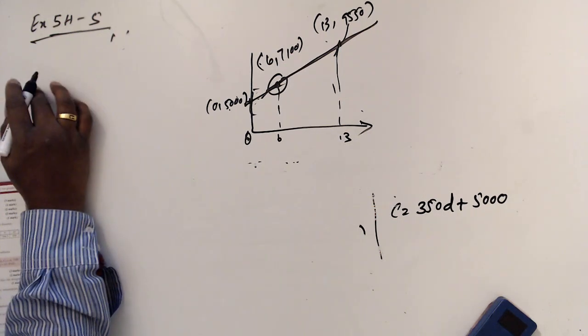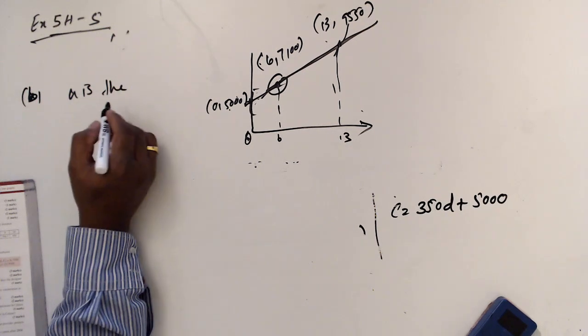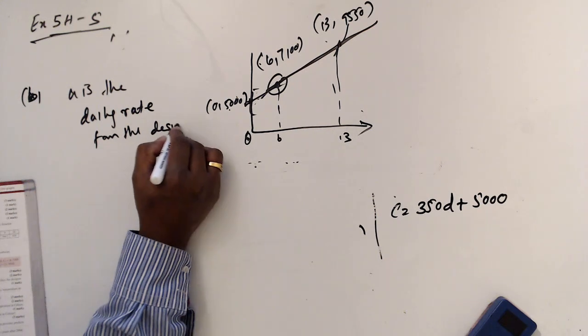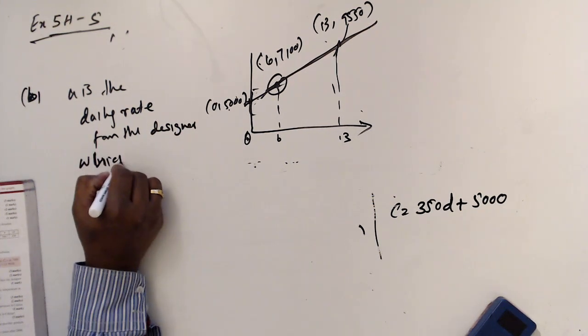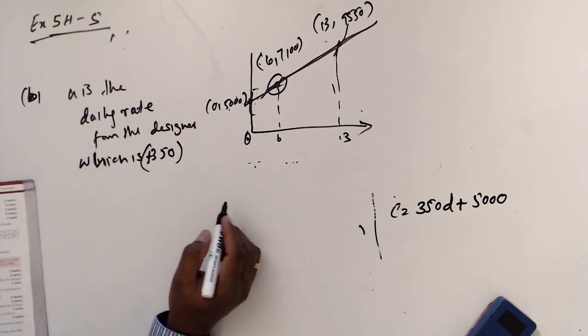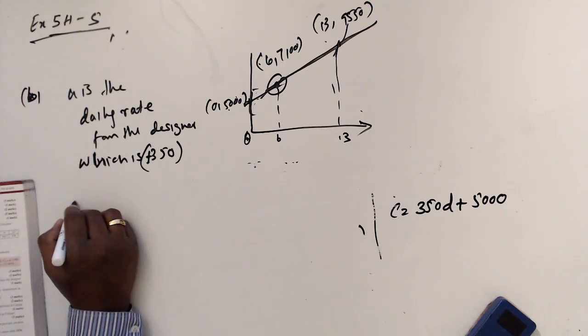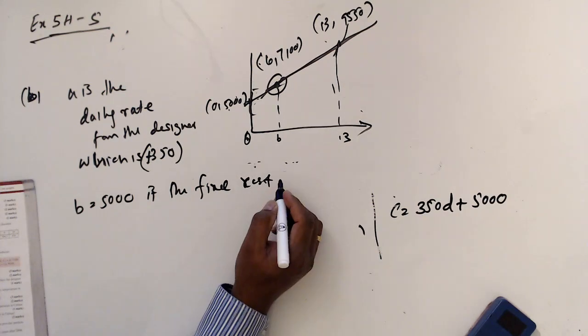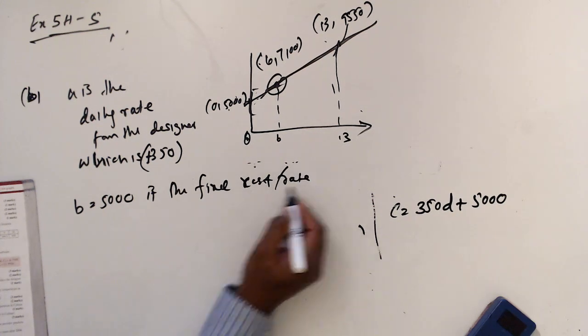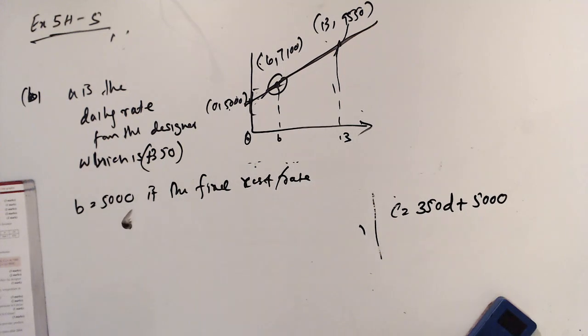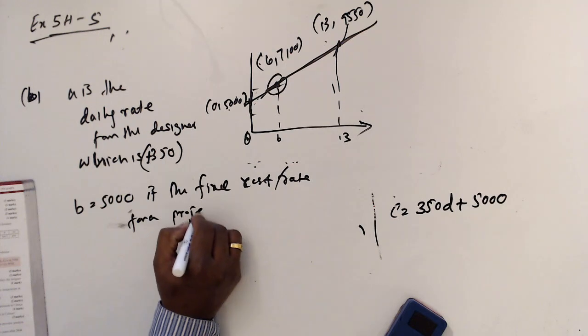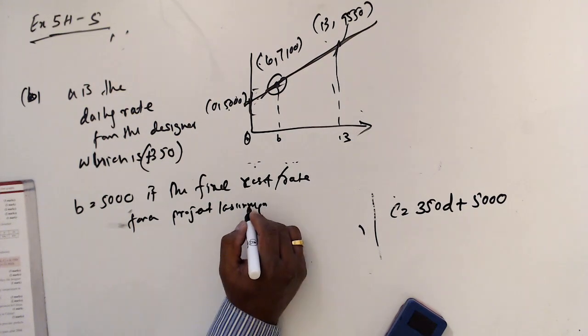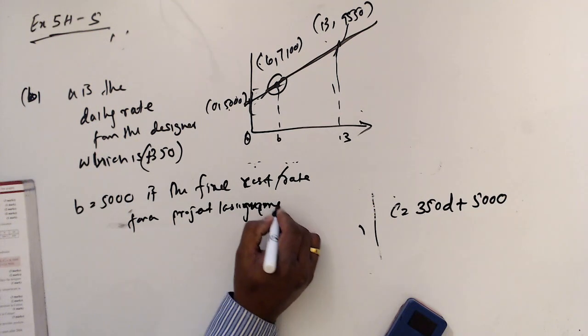So A and B. A is the daily rate for the designer which is 350 pounds. Then B, 5000, is the fixed cost or rate for a project per assignment.